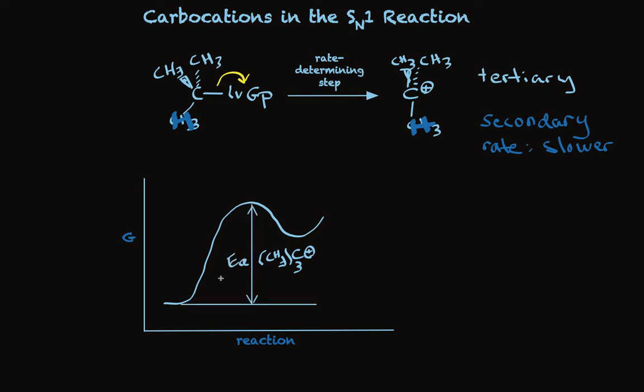And what we're saying when we say that this secondary alkyl group to form a secondary carbocation has a slower rate is that the activation energy is greater. So for the secondary substrate, we're going to have a higher activation energy and a less stable carbocation. We remember perhaps that this secondary carbocation is less stable than tertiary.